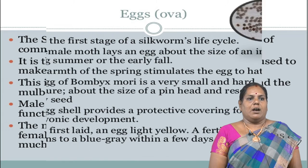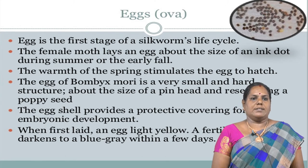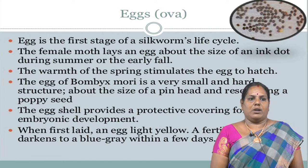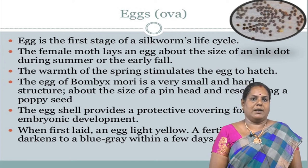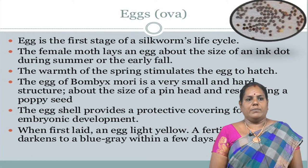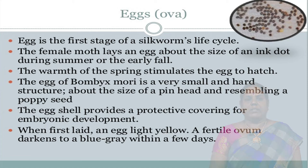The egg is the first stage of a silkworm's life cycle. The female moth lays an egg about the size of an ink dot during summer or early fall. The warmth of spring stimulates the egg to hatch. The egg of Bombyx mori is a very small and hard structure about the size of a pinhead, resembling a poppy seed. The egg shell provides a protective covering for embryonic development. When first laid, an egg is light yellow in color, and a fertile egg darkens to a blue-gray within a few days.